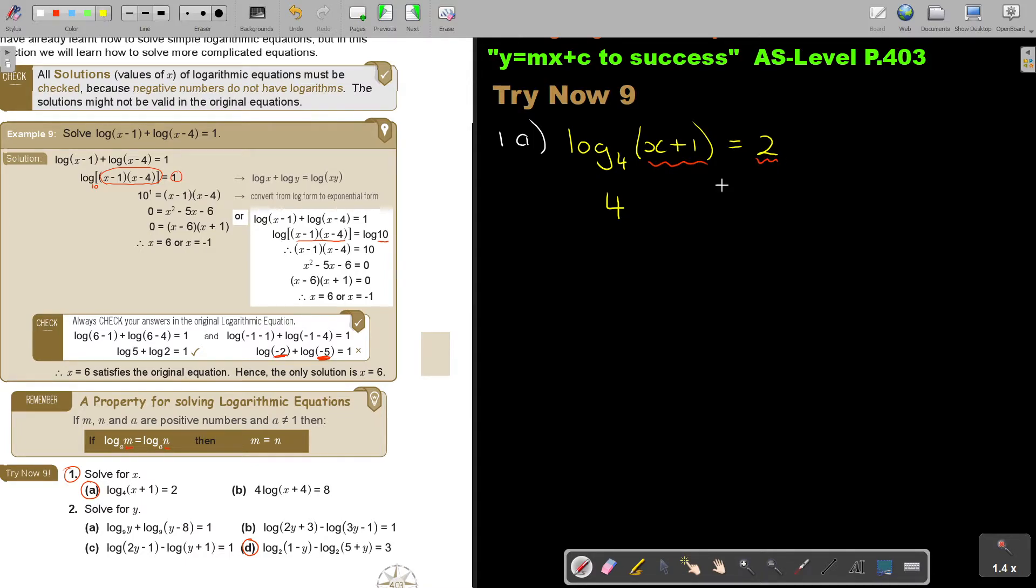So, it's going to be 4 and I'm going to swap this too. And I'm just going to say 4 to the power 2 is equal to X plus 1. So, 16 is equal to X plus 1. So, X equals 16 minus 1. So, therefore, X is equal to 15.